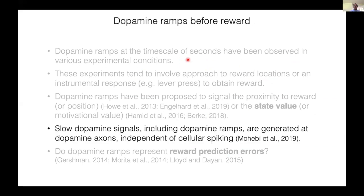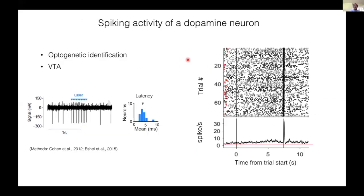What about spiking activities? A recent study proposed that slow dopamine signals may be independent of somatic spiking activities. To address this question, we recorded the spiking activity of optogenetically identified dopamine neurons in the VTA. Here is an example of a neuron. We observed a small but significant increase before reward, as evident from the denser spikes in the raster plot.